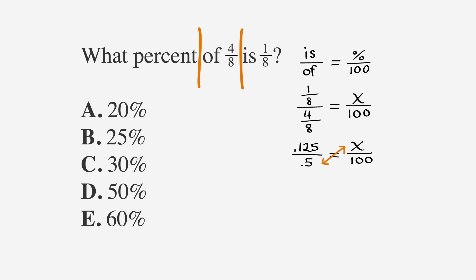Then we can cross multiply and get 0.5x equals 12.5. When we divide both sides by 0.5, we end up with 25%, which is choice B.